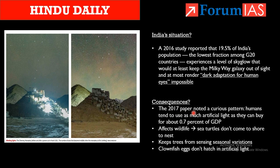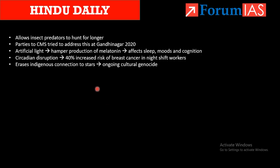19.5 percent of India's population experiences a level of sky glow that renders the Milky Way out of sight and makes dark adaptation for human eyes almost impossible, because light is present 24/7. Light pollution also affects wildlife: sea turtles don't come to shore to nest because of it, trees cannot sense seasonal variations, even clownfish eggs don't hatch in artificial lighting, and predator insects can hunt for longer durations. The Convention on Migratory Species in 2020 at Gandhinagar addressed this issue, but to date there is no comprehensive treaty exclusively dealing with light pollution.